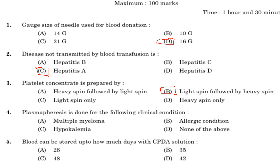Fourth question: plasma apheresis is done for the following clinical condition. Option A: multiple myeloma. Option B: allergic condition. Option C: hypokalemia. Option D: none of the above. Answer is Option A, multiple myeloma. In multiple myeloma, plasma apheresis is used to remove myeloma proteins from the blood.